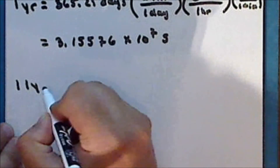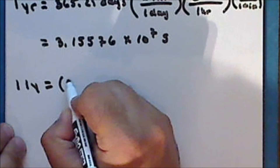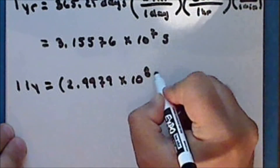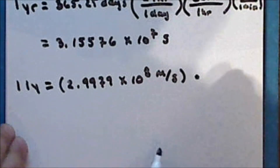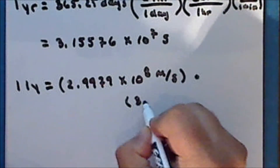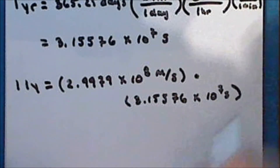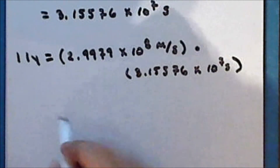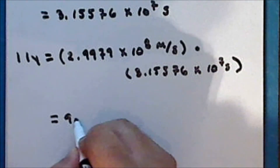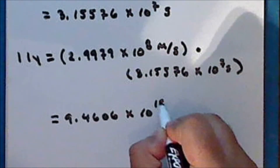So in seconds, one year is equal to 3.15576 times 10 to the seventh seconds. One light year is equal to the speed of light in a vacuum — which to five significant figures is 2.9979 times 10 to the eighth meters per second — times 3.15576 times 10 to the seventh seconds. So to five significant figures, one light year is 9.4606 times 10 to the fifteenth meters.